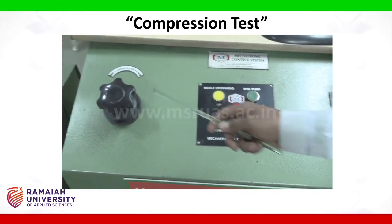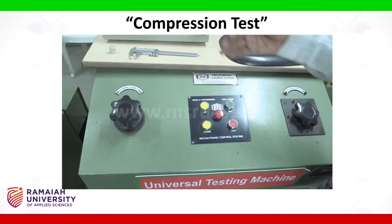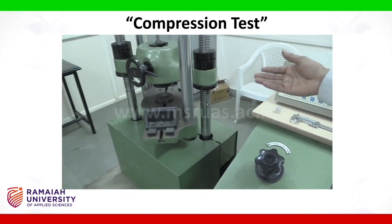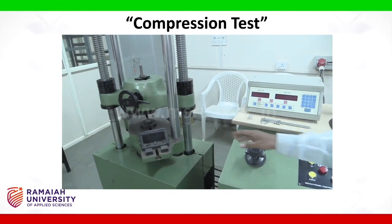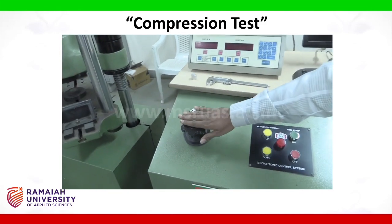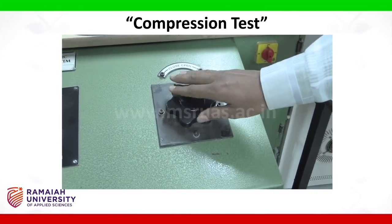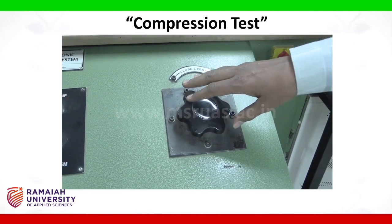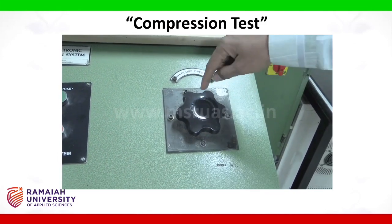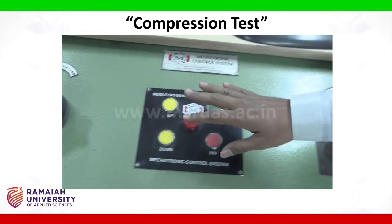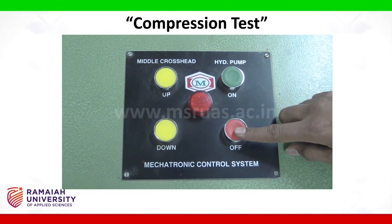There are two knobs on the control panel. The first is the return line valve control — when we want to unload and bring down the lower position, we open this so that the fluid comes out and there is no fluid pressure. When we are doing the experiment, this valve has to be closed. The second is the supply side valve, which is normally closed. When we want to apply the load, we turn it in the right direction and open the valve. The other knobs control switching the hydraulic pump on and off.